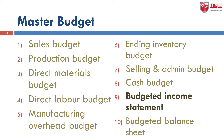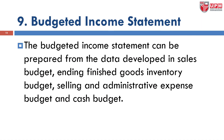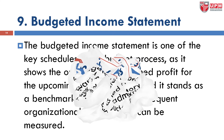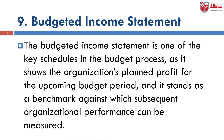The next one is the budgeted income statement. It can be prepared from data developed in the sales budget, finished goods inventory budget, selling and administrative expenses budget, and cash budget. The budgeted income statement is one of the key schedules in the budget process as it shows the organization's planned profit — you can set what the profit target is for the year, whether 10%, 20%, 30%, or more. It stands as a benchmark against which subsequent organizational performance can be measured — it's like a target for the company for the year.